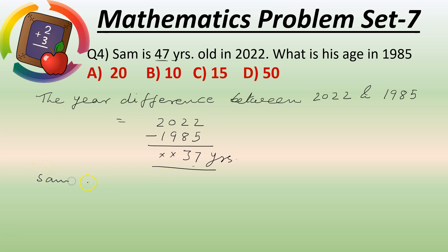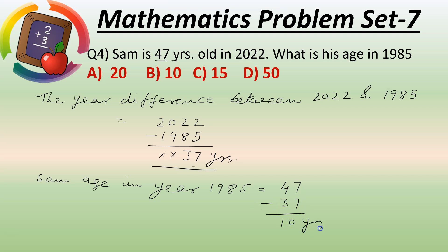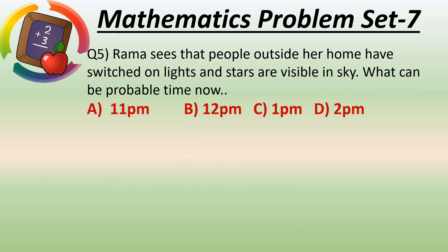Sam's age in 1985 equals the age in 2022 minus 37 years: 47 minus 37 equals 10 years. So in 1985 Sam is 10 years old. Option A is 20, Option B is 10, Option C is 15, Option D is 50. Option B is the right answer.